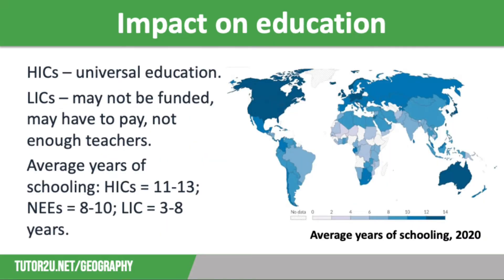Let's start off by considering the impact on education. In HICs, education tends to be universal — i.e. all children attend school — whereas there are significant variations in access to education in LICs and NEEs. There are several reasons for this variation, including whether education is valued enough to fund it properly, whether families have to pay to send their children to school, which is the case in many LICs, and whether there are enough qualified teachers.